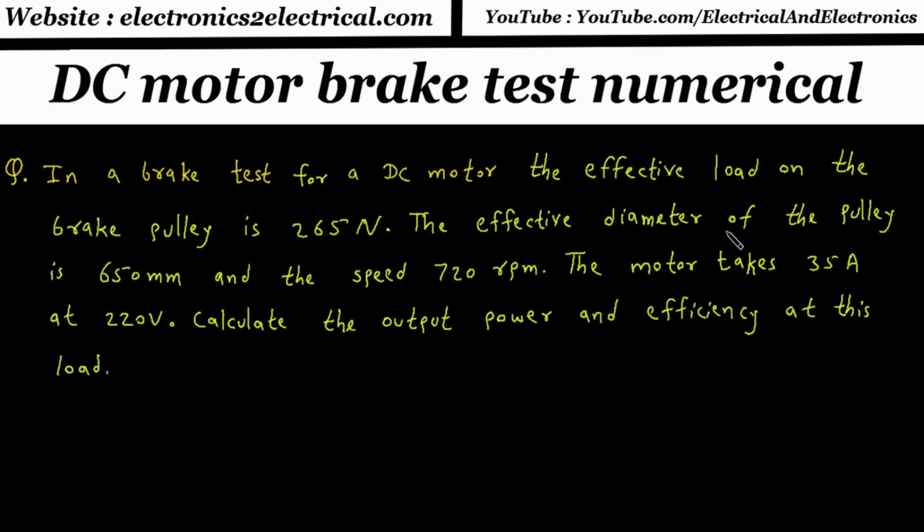The effective diameter of the pulley is 650mm and the speed is 720rpm. The motor takes 35A at 220V. Calculate the output power and efficiency at this load.